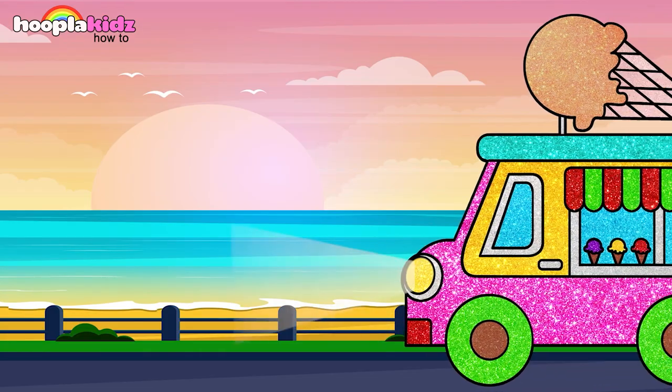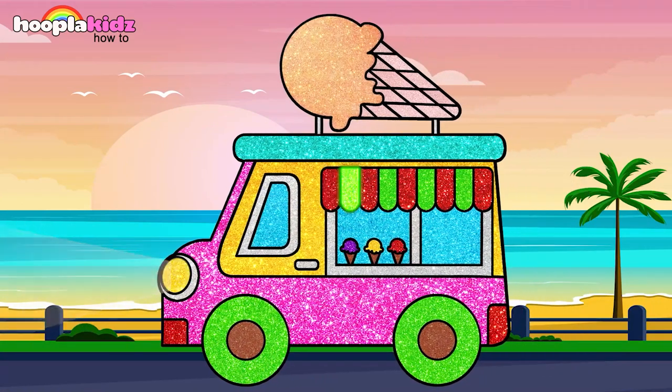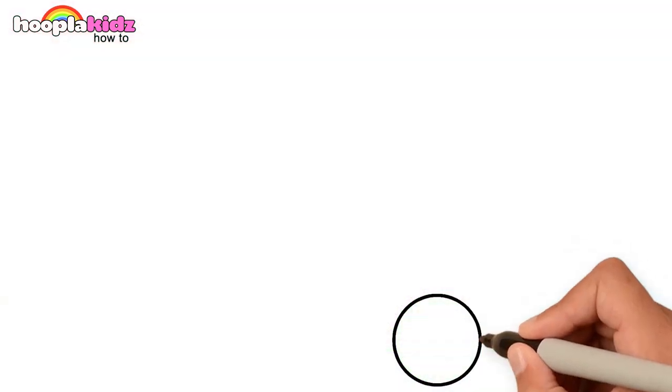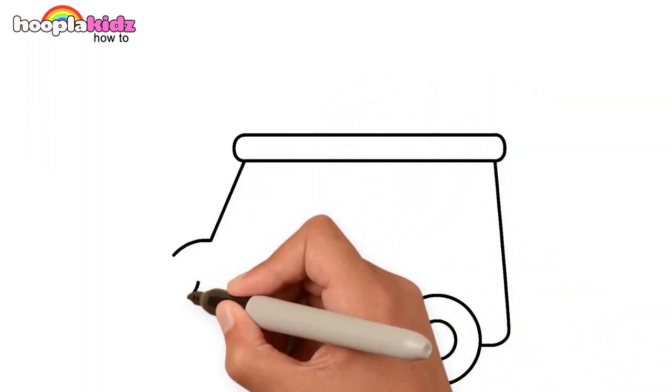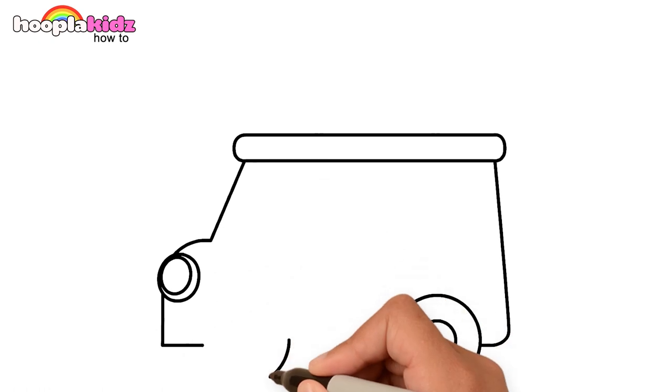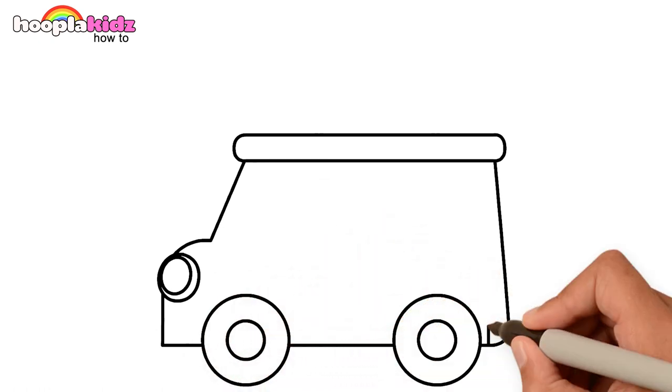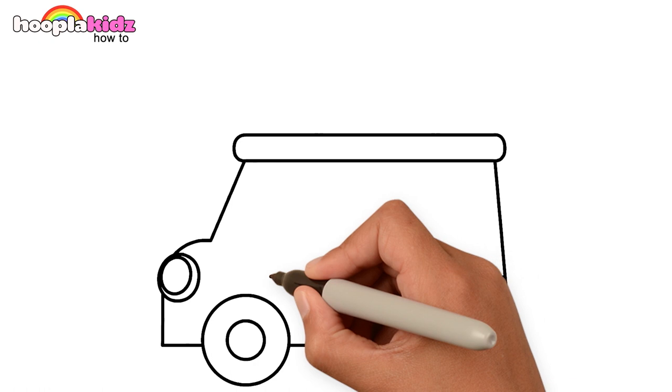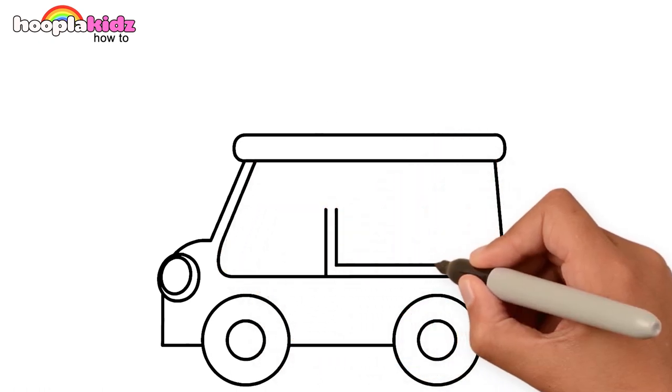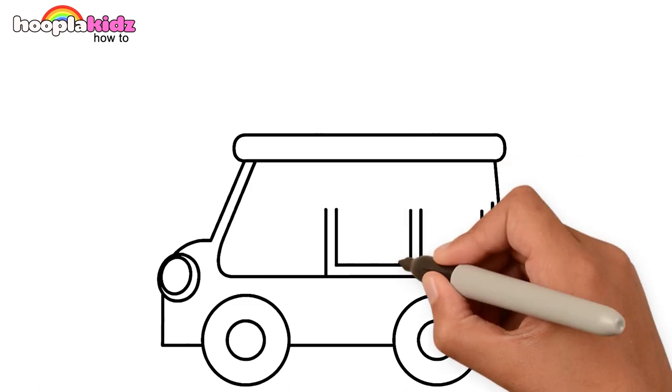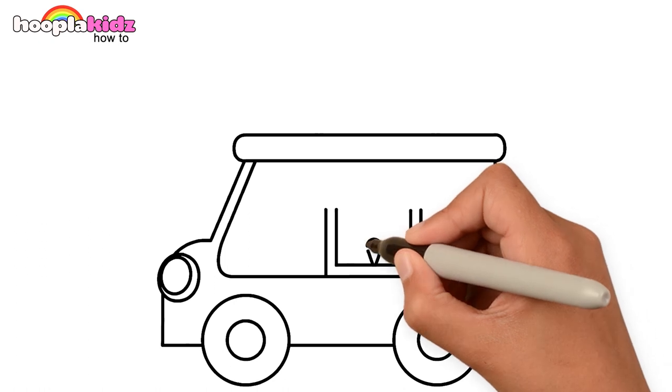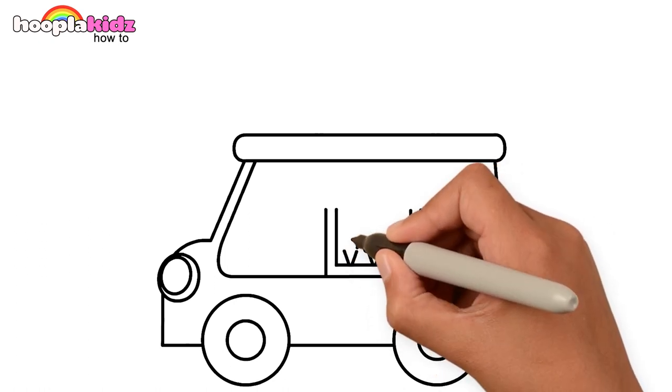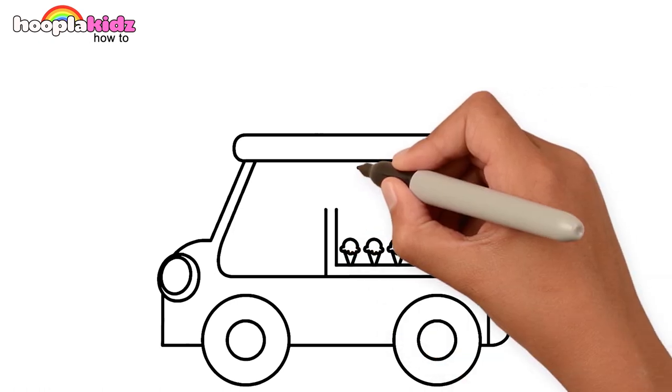Hey kids. Look what it is. An ice cream van. Yay! Are you ready to draw it? Let's begin. Start with the wheels. Draw the van. And headlight. Another wheel too. Tail light. The window. And the real magic. Ice cream.